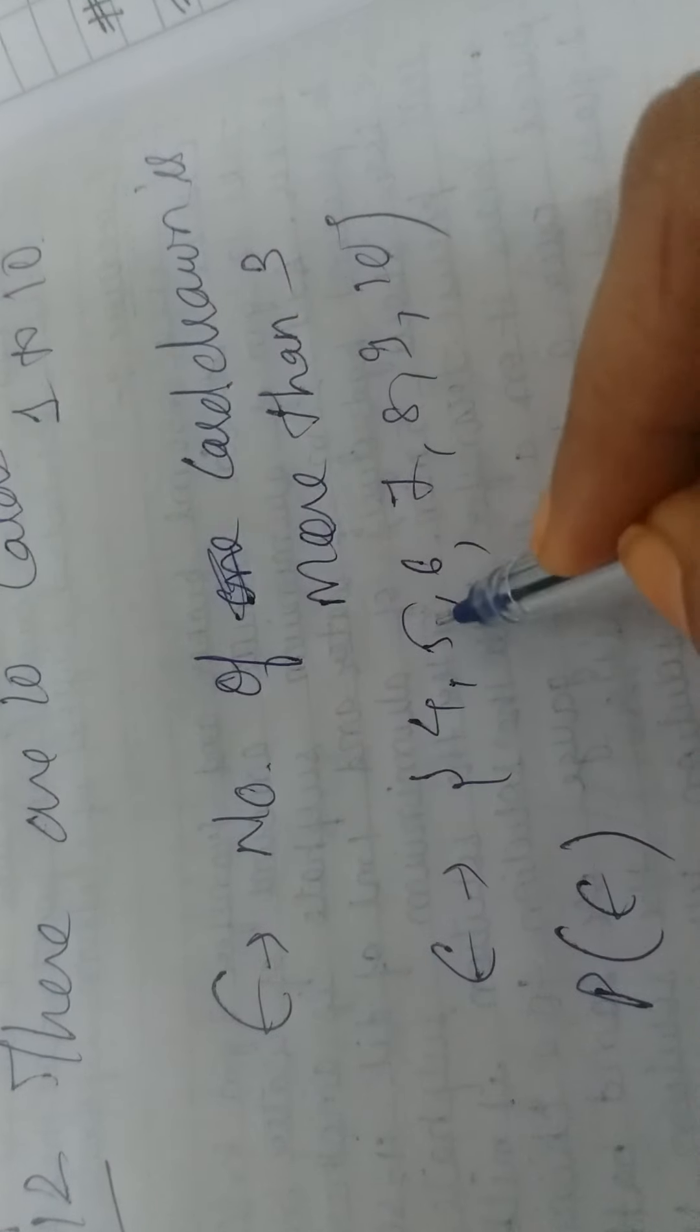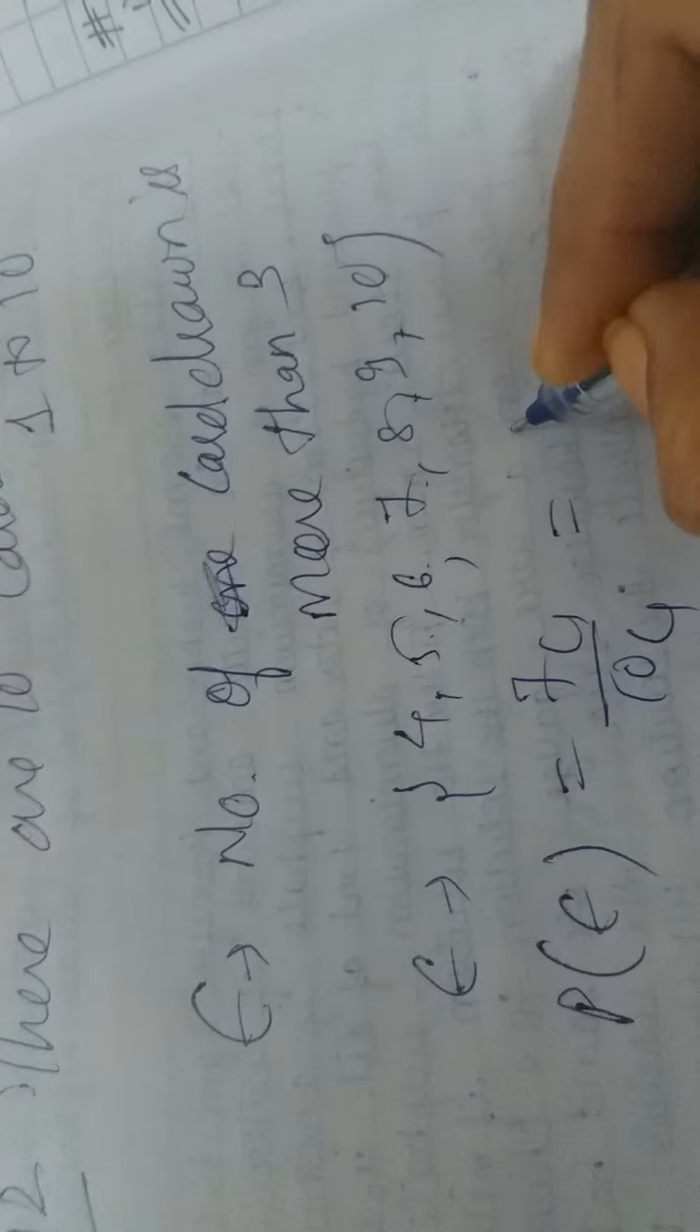3 se bada number hona chahiye. So what will be in E condition? 4, 5, 6, 7, 8, 9, 10. So probability of E? How many values? 1, 2, 3, 4, 5, 6, 7. So 7 is even and total are 10 is even. I told you combination last year. You studied probability from combination. Same combination is used here. One card draw is even. 7 by 10.